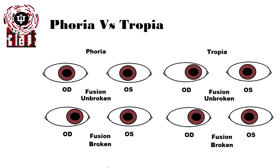So what's the difference between a phoria and a tropia? It really depends upon the presence of fusion. A phoria is a vergence that can still be controlled by muscle tone and innervation from the brain to maintain fixation in a natural position. When fusion is unbroken, the eyes will fixate normally and appear aligned. Tropia, on the other hand, is when regardless of whether fusion is broken or not, the eye has a turn to it — it is mispositioned whether they fixate on a target or not. On the left side we see a phoria: when fusion is unbroken the eyes fixate, but once fusion becomes broken, we see the eye turns in.